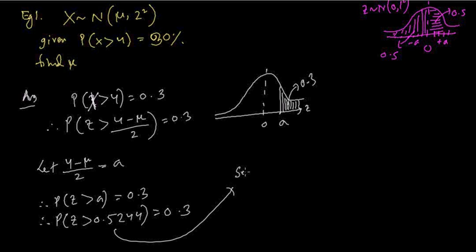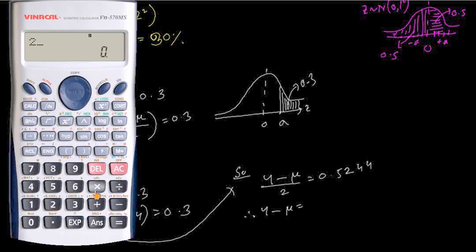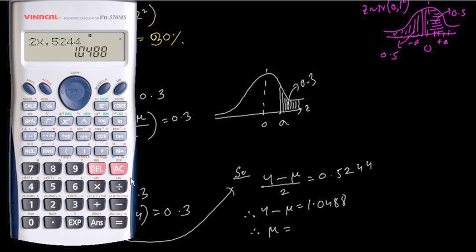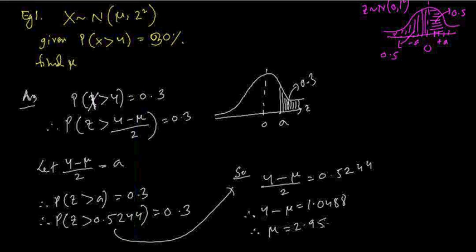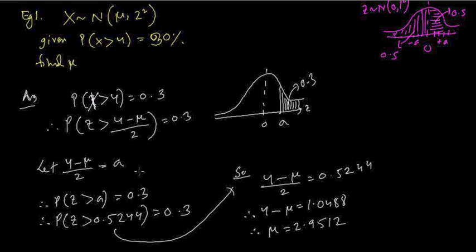So (4 minus μ) divided by 2 equals 0.5244. Therefore, 4 minus μ equals 2 times 0.5244, which is 1.0488. So μ equals 4 minus 1.0488, which gives 2.9512. Depending on what the question asks, you can write the answer to one or two decimal places. For this type of sum, we use the percentage table, which is the greater-than table.